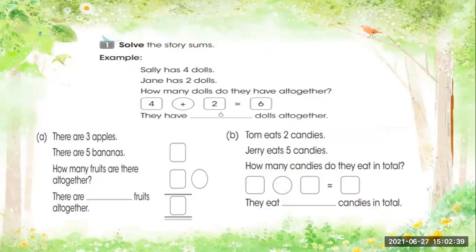Now in letter A: there are three apples and there are five bananas. How many fruits are there all together? Apples and bananas are fruits. We will write the number sentence in vertical form from the top going down. Three apples and five bananas — three plus five is equal to eight. Therefore, there are eight fruits all together.